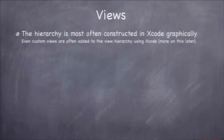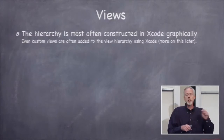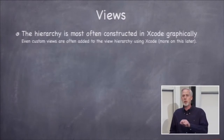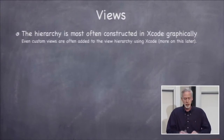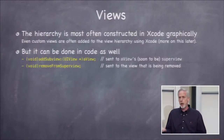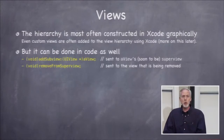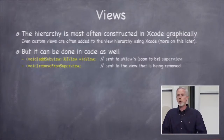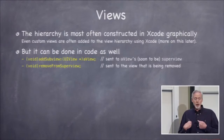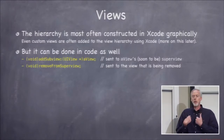This hierarchy of views — views inside views — is most often built in Xcode by just dragging views in. However, we can also build and tear down this view hierarchy in code with two methods. 'addSubview' takes a view and adds it as a subview of some other view — you send that to the view you want to be the parent. On the opposite side, to remove a view from the hierarchy, you send 'removeFromSuperview' to the view you want to remove, not to its parent.